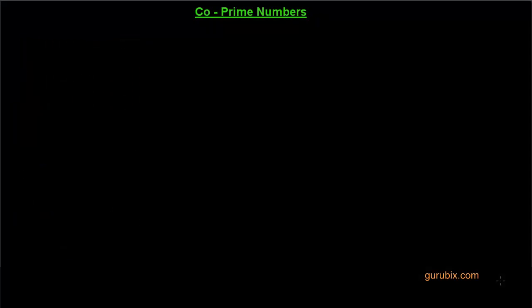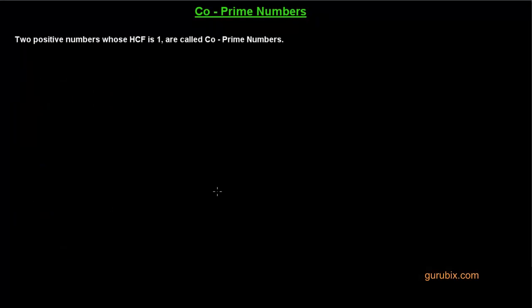Co-prime numbers: the definition of co-prime numbers is as follows — two positive numbers whose HCF is one are called co-prime numbers. Let me give you some examples. Example one: let us take three and four.